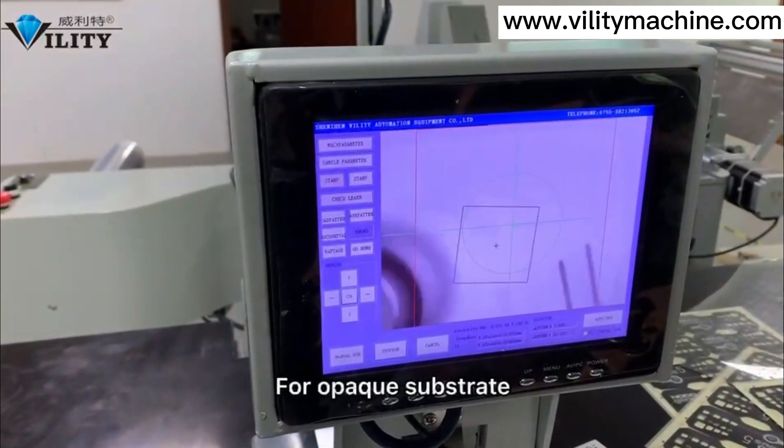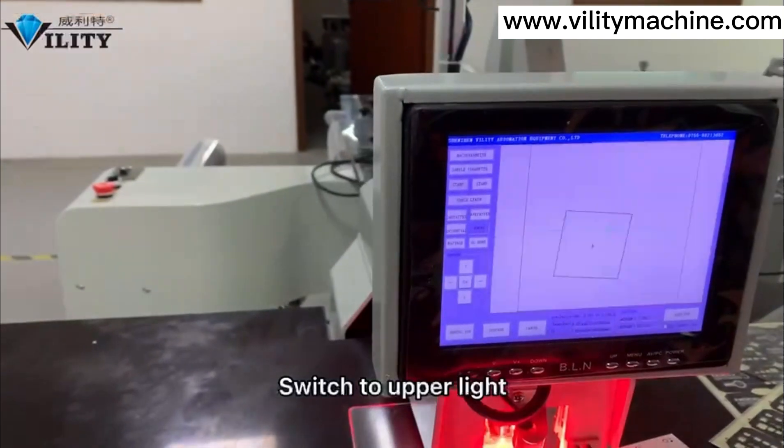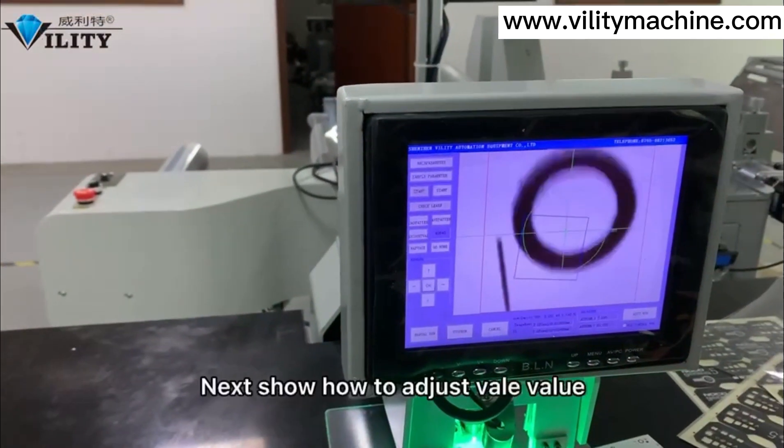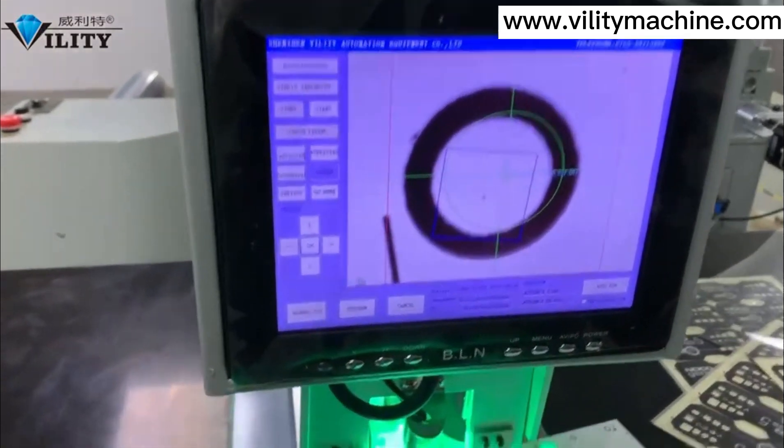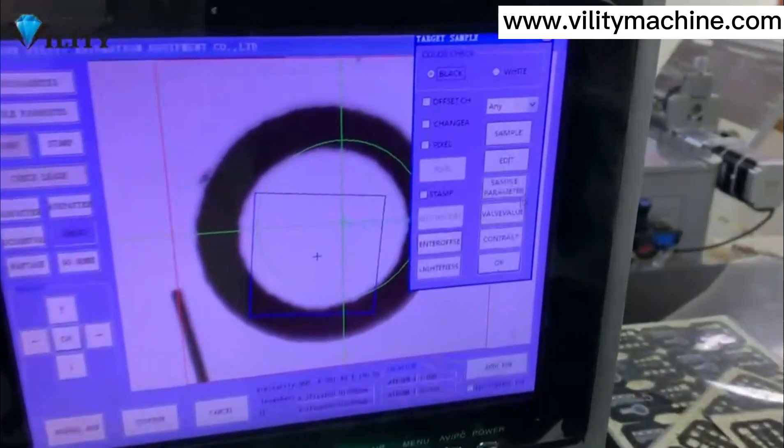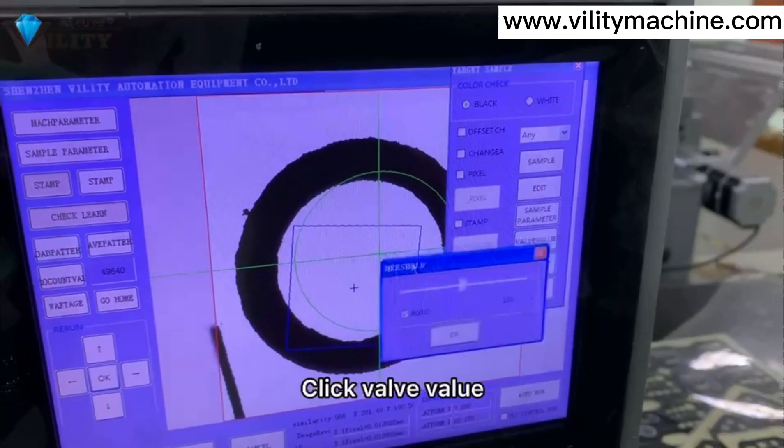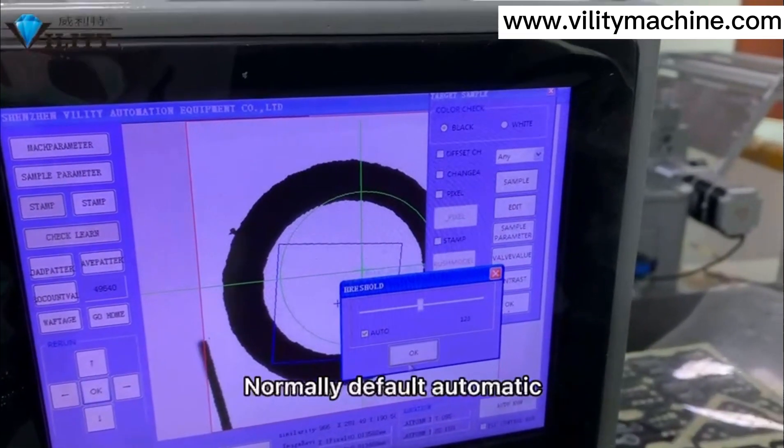For opaque substrate, switch to upper line. To adjust web value, open machine parameter and click web value. Normally, the default is automatic.